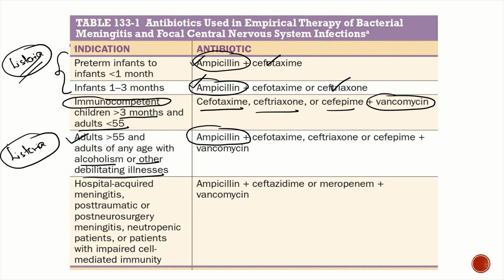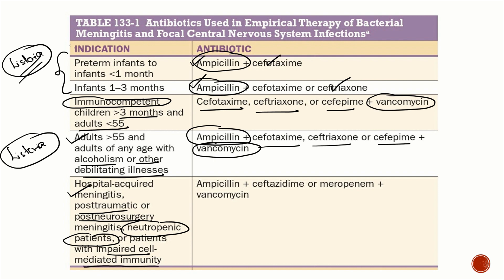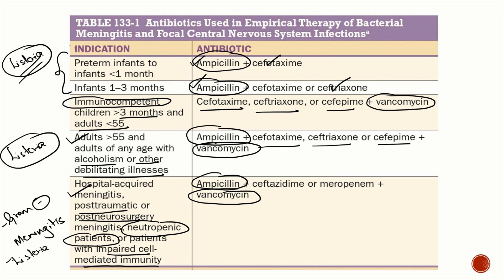Whenever there is a Listeria risk factor, add ampicillin to the usual cefotaxime/ceftriaxone/cefepime plus vancomycin regimen. For hospital-acquired meningitis, post-traumatic, post-neurosurgery, neutropenic patients, or those with impaired cell-mediated immunity (e.g., HIV), there is high risk of gram-negative and Listeria meningitis. Add ampicillin for Listeria, vancomycin as usual, and an antipseudomonal agent — ceftazidime or meropenem — since Pseudomonas is the most important gram-negative cause.